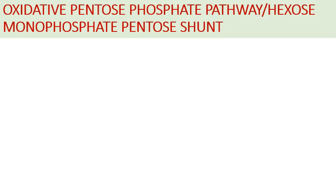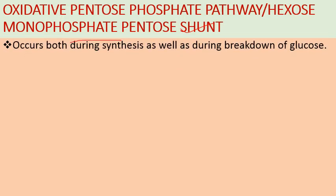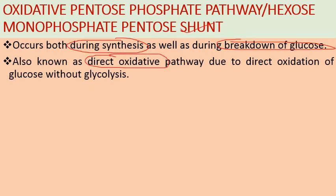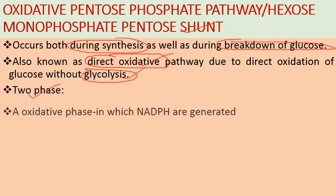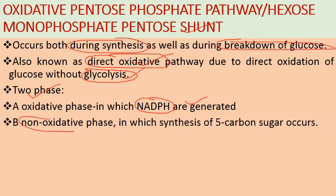Next is the oxidative pentose phosphate pathway, also known as hexose monophosphate shunt. It involves the direct oxidation of glucose without glycolysis, occurring both during synthesis and breakdown of glucose. It is also called the direct oxidation pathway. Glucose is oxidized in two phases: first the oxidative phase, which produces NADPH by dehydrogenation, and second the non-oxidative phase, in which five-carbon sugars are synthesized.